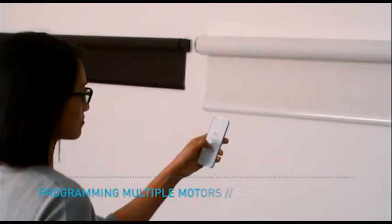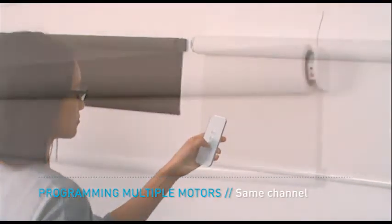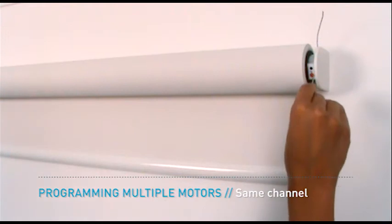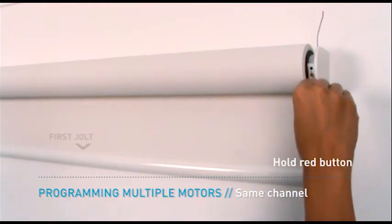Multiple motors can be programmed for operation on the same channel. Disconnect the motor you have already programmed by holding the red button on the motor until it jolts twice.